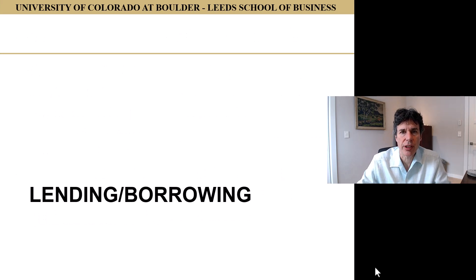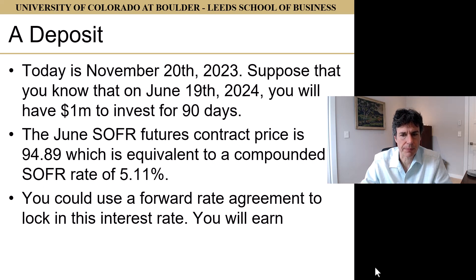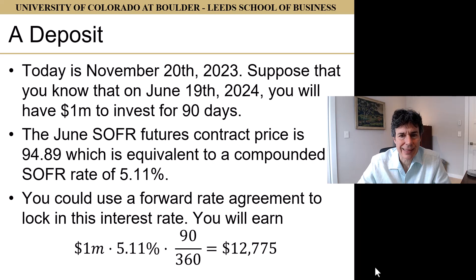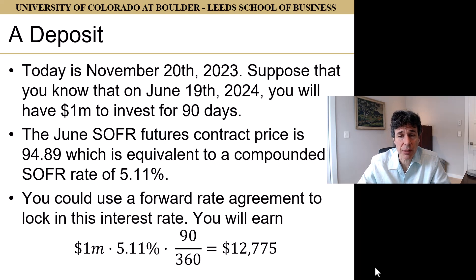Another use is to lock in rates for lending and borrowing. Say today is November 20th, 2023, and we know that on June 19th, 2024, we'll have $1 million to invest for 90 days. The June SOFR futures contract is trading at 94.89, equivalent to a compounded SOFR rate of 5.11%, corresponding to compounded SOFR from June 19th for 90 days. Assuming we could trade at fair, we could lock in this rate via a forward rate agreement and earn $1 million × 5.11% × 90/360 = $12,775 in interest.